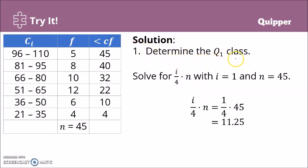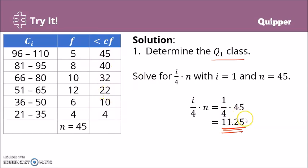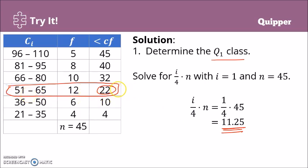Now let's determine the first quartile class. Remember, this is not yet the first quartile — it's the first quartile class. We solve for i over 4 times n. Since we are looking for the first quartile, i is 1, and n is 45. That's 1 over 4 times 45, which gives us 11.25. We look for the closest less than cumulative frequency that is greater than 11.25. Among 22, 32, 40, and 45, the closest one is 22 — so this is our Q sub 1 class.